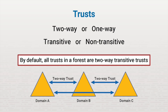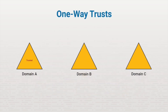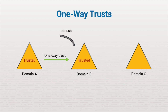In a two-way transitive trust, the same transitive trust goes in reverse. Domain C also trusts domain A in this example. A one-way directional trust is an authentication path between two domains where one domain is trusted by the other domain, but the trust is not established in the opposite direction. For example, domain A trusts domain B. This allows users from domain B to access resources in domain A.